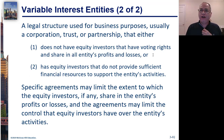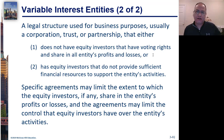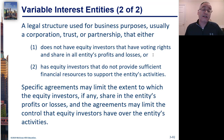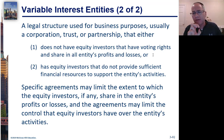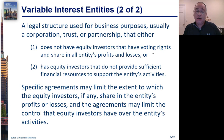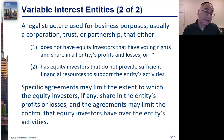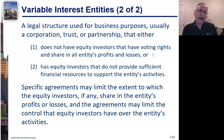At its heart, a variable interest entity is one where profits and losses go somewhere other than the stockholders. You could have a profit-sharing plan where 10% of profits go elsewhere. But VIEs are more extreme — you might hold 100% of the stock yet only be guaranteed a 5% return on investment every year. It doesn't matter how profitable or unprofitable the entity is; you're entitled to just 5%. There's no connection between your ownership and the actual profits.